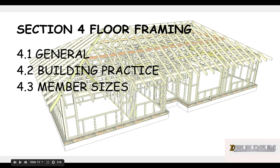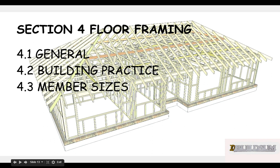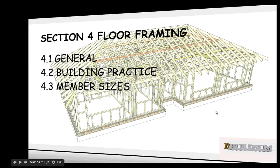Section 4 gets into framing, so it looks at floor framing. Most of the framing areas are broken up into three parts: general information, then section 4.2 which is about how the members are used, and then 4.3 which directs you to the correct table to get the member size. That's for floor framing in section 4.